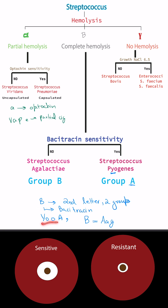To remember: 'pyogenes' is in Group A — 'yo A'. And for Group B, we use bacitracin antibiotic, and B is for agalactiae — 'B is egg'. So remember 'yo A' and 'B is egg' as mnemonics.